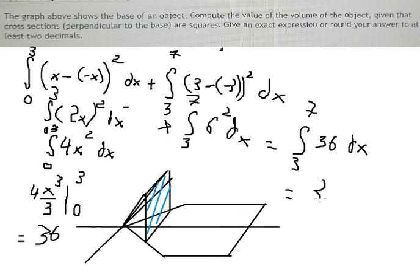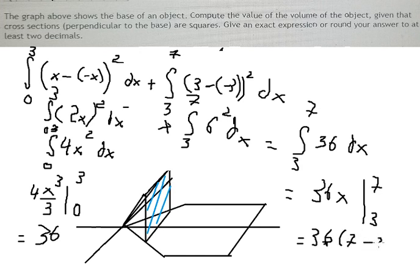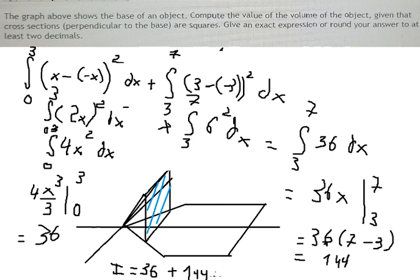For the second integral, we have 36x, evaluated from 3 to 7. We calculate 36 times 7 minus 36 times 3, giving us 144 minus 24 equals 144. We sum the two results together and the final answer is 188.